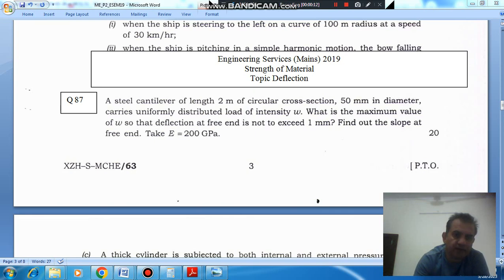A steel cantilever of length 2 meters of circular cross section 50 mm in diameter carries uniformly distributed load of intensity W. What is the maximum value of W so that the deflection at free end is not to exceed 1 mm? Find out the slope at the free end. Take E is equal to 200 GPa.